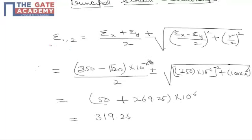Principal strains come out as epsilon x plus epsilon y by 2, plus-minus... When the positive sign is considered, it gives the major principal strain, and when the negative sign is considered, it gives the minor principal strain.